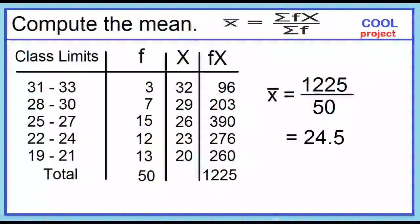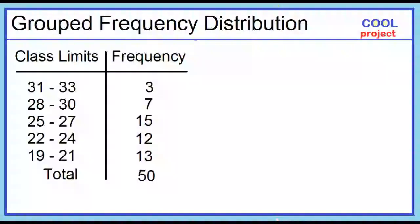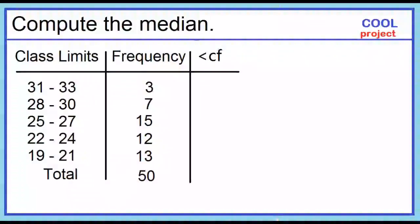Now let's find the median for this grouped frequency distribution. To compute the median, add a column for the less-than-cumulative frequency. To find the values, copy the frequency of the lowest class interval, then add the frequencies successively.